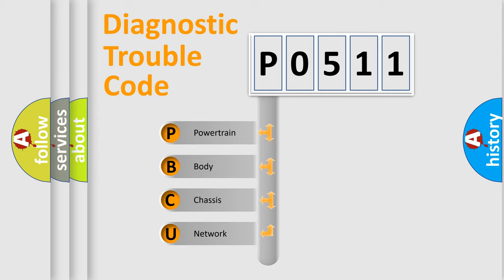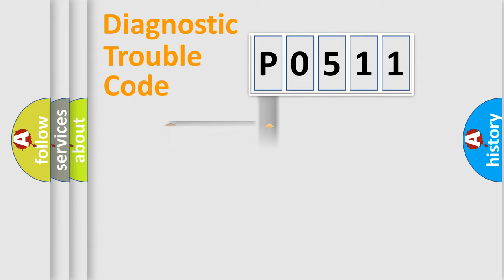We divide the electric system of automobile into four basic units: Powertrain, Body, Chassis, and Network.